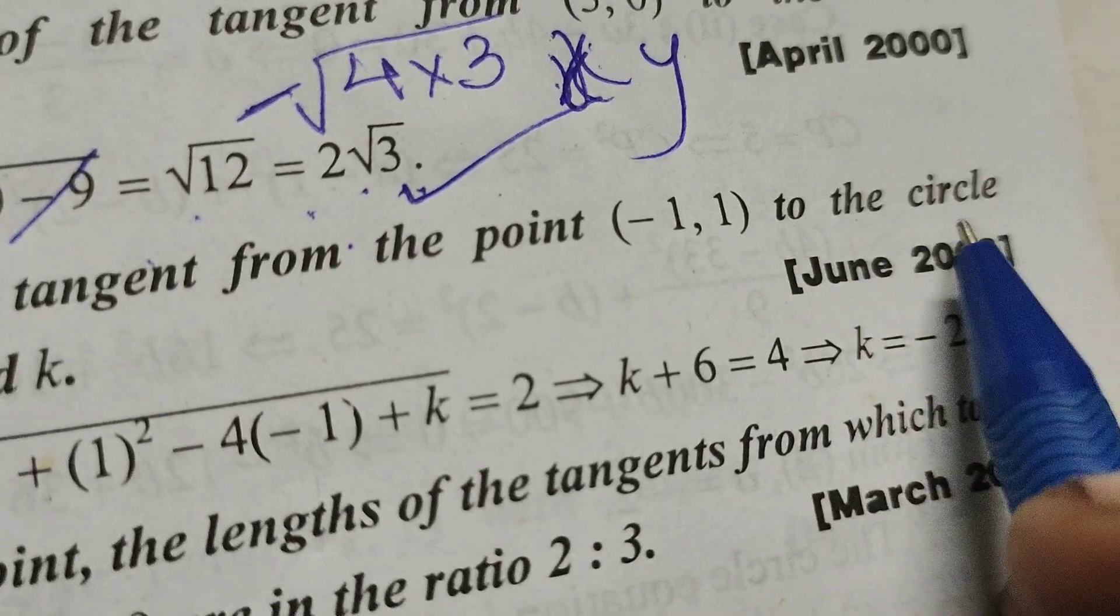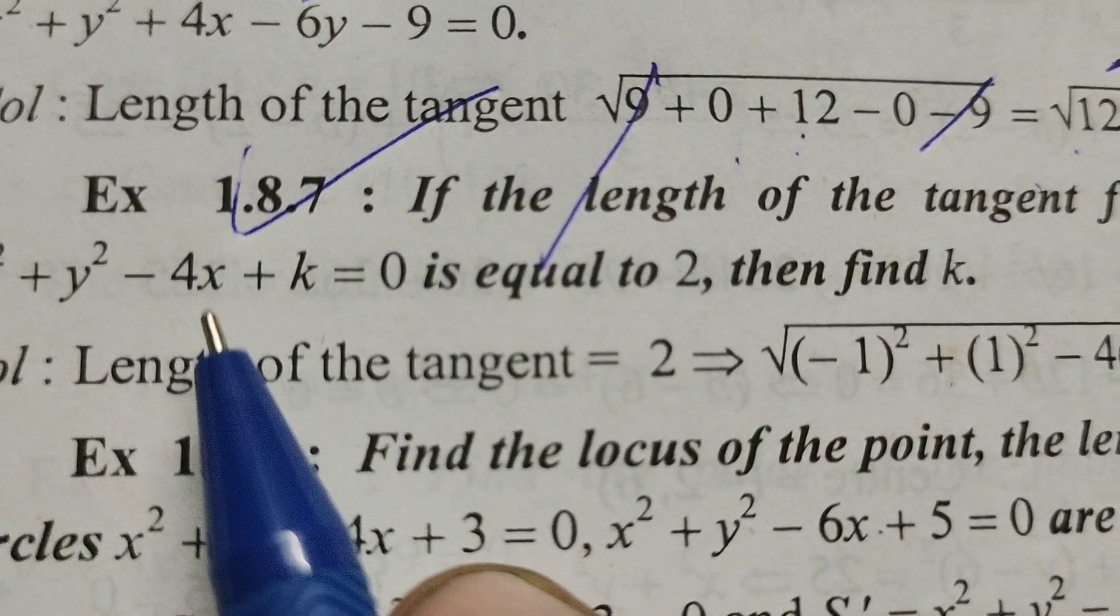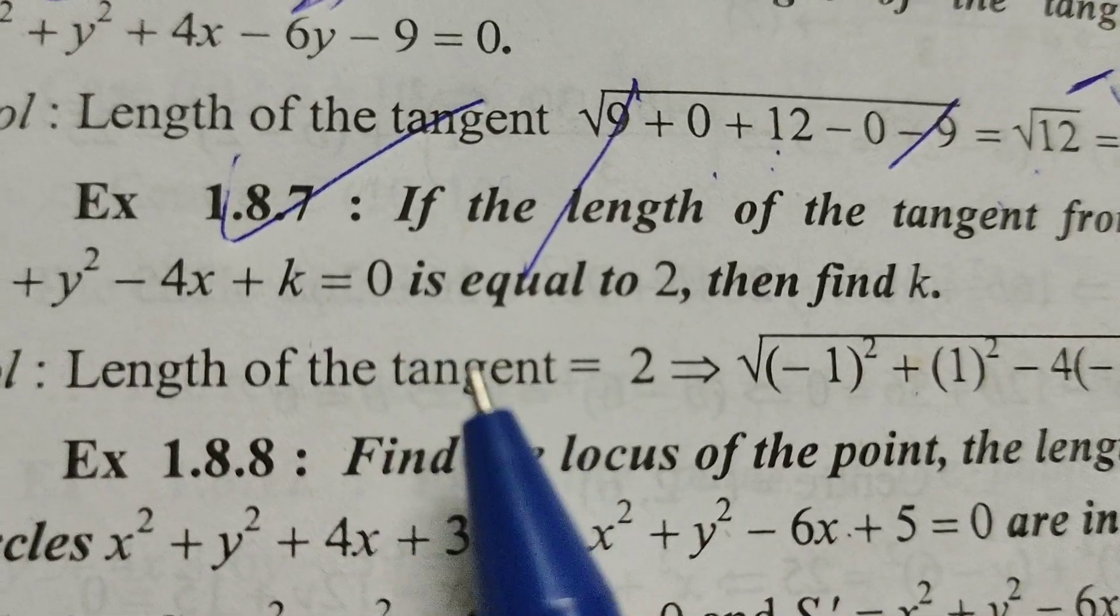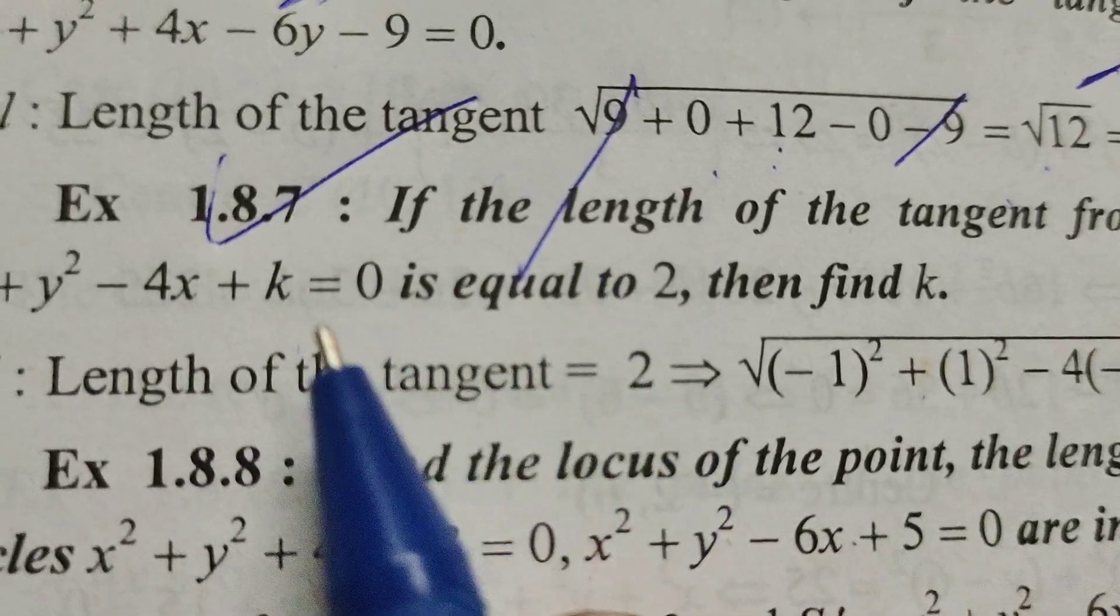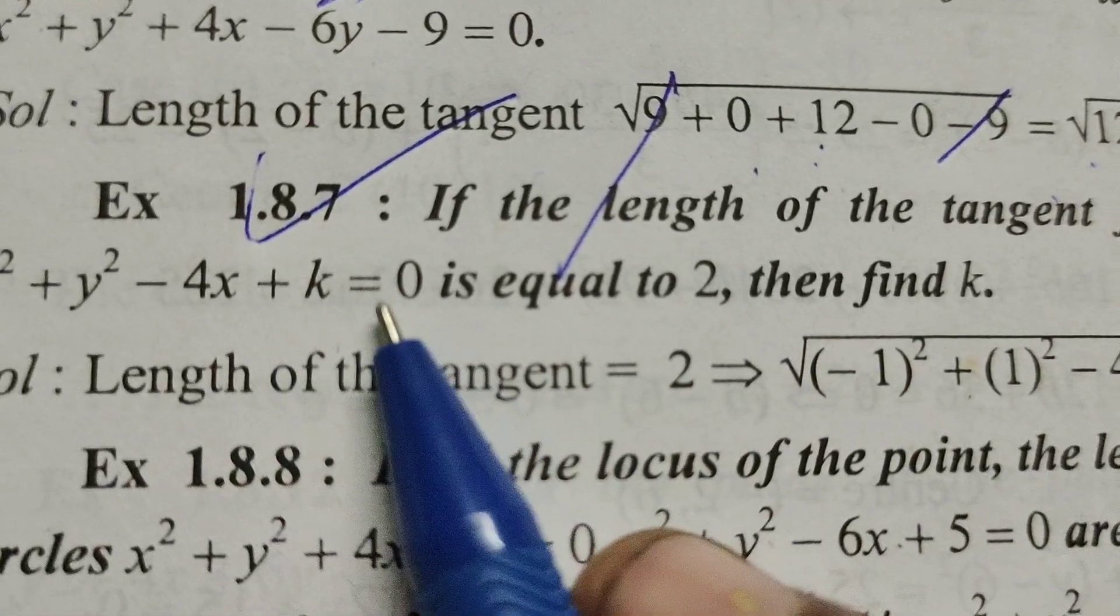1,1 to the circle x square plus y square minus 4x plus k equals to 0. But here given that this length of tangent is equals to 2. Then find this value of k.